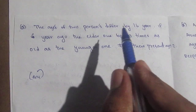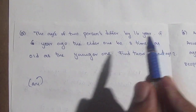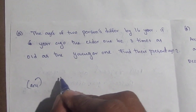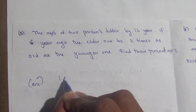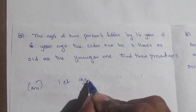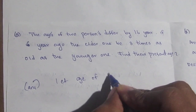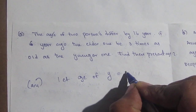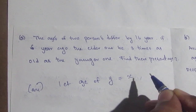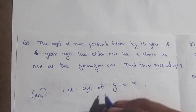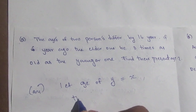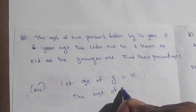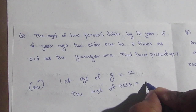We have two persons — an elder one and a younger one. Let the age of the younger person be X. Then the age of the elder person is X plus 16, since they differ by 16 years.